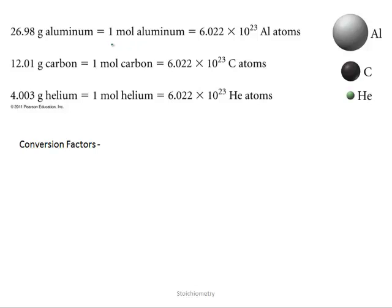So we know that one mole of any substance is going to be 6.022 times 10 to the 23rd units. One mole of aluminum has a mass of 26.98 grams. But because it's one mole, it's still 6.022 times 10 to the 23rd aluminum atoms, just like carbon. One mole of carbon has that same number of atoms, same number of helium atoms in one mole.